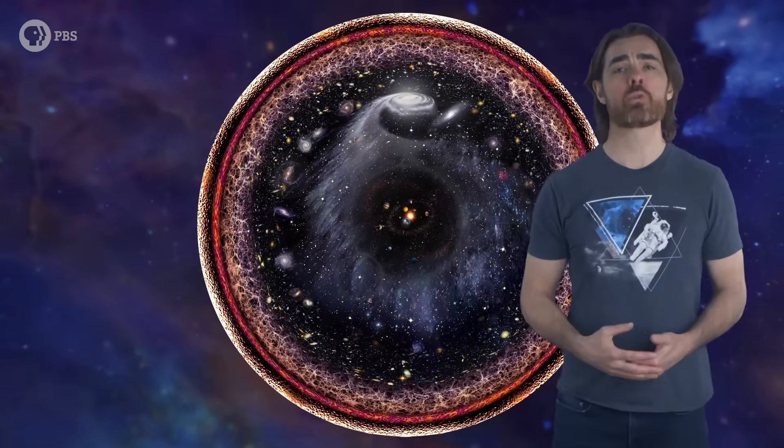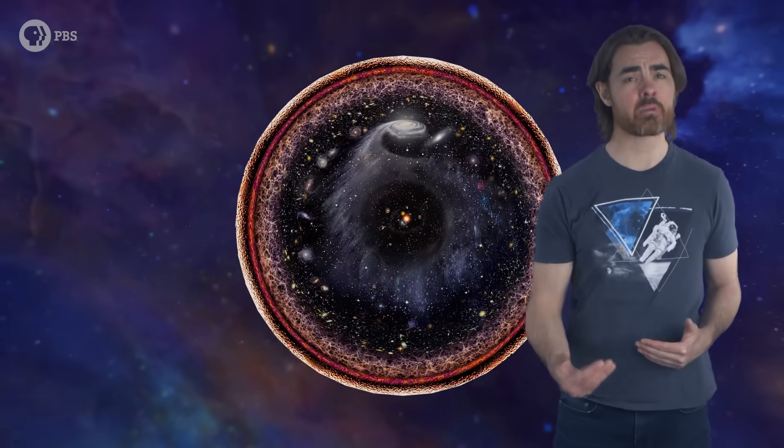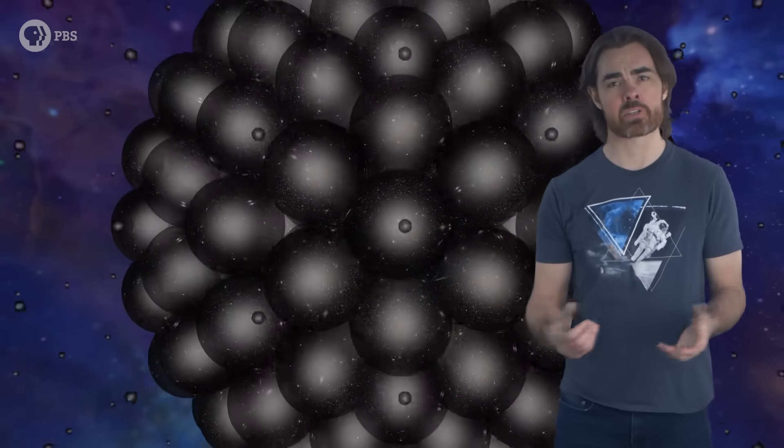For example, we have the observable universe, that patch that we can see and beyond which light has not yet had time to reach us. Its boundary is called the particle horizon. Beyond it, there exists at a minimum thousands and possibly infinitely more regions just as large.